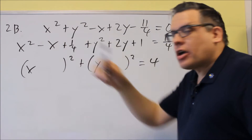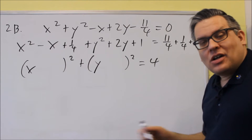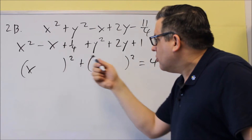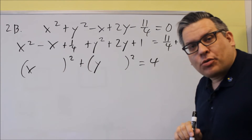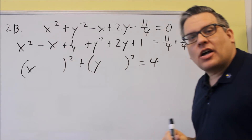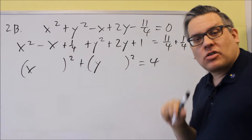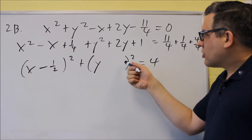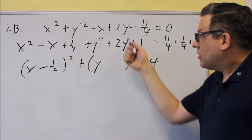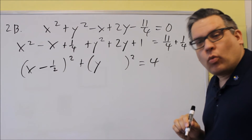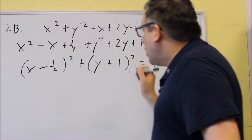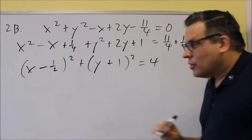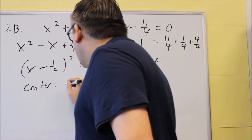Now for the factored form: the number in front of x is 1, and 1 divided by 2 is 1 half — that's the number that goes inside the parenthesis. Step one of complete the square is always what goes inside that space. So negative 1 divided by 2 is negative 1 half, which goes in the x-term. And for the y-term, 2 divided by 2 is 1, so that's a plus 1. Now we have the equation in standard form, so we can find the center and the radius.